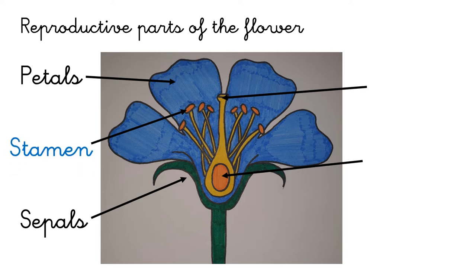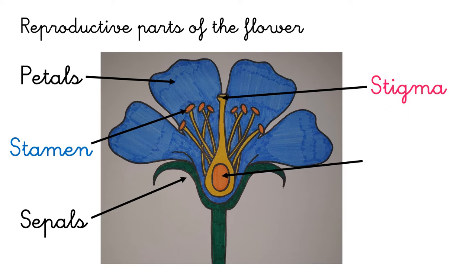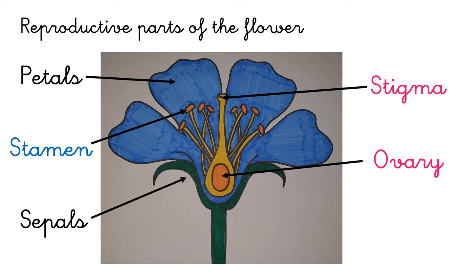Stamen. The stamen is the part of the flower that produces pollen. It's in blue because it's the male organ of the flower. Then we've got the stigma, which is the part where pollen has to enter. And the ovary, where the seeds are produced. The stigma and the ovary are in pink because they are the female parts of the flower. The stigma and the ovary form the carpel.